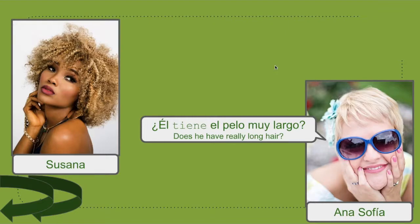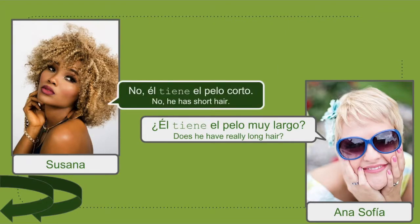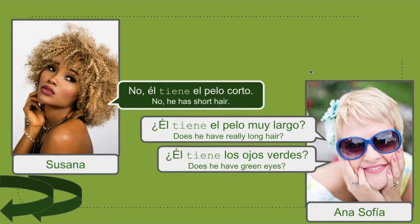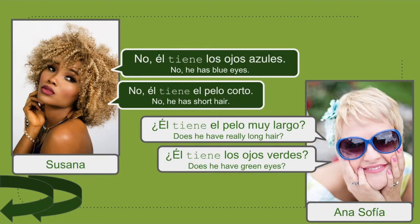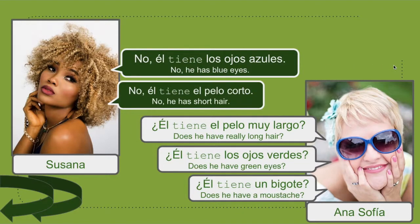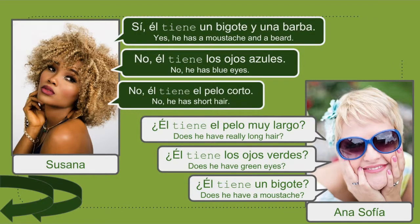¿Él tiene el pelo muy largo? No. ¿Él tiene el pelo corto? ¿Él tiene los ojos verdes? No. ¿Él tiene los ojos azules? ¿Él tiene un bigote? Sí. ¿Él tiene un bigote y una barba?